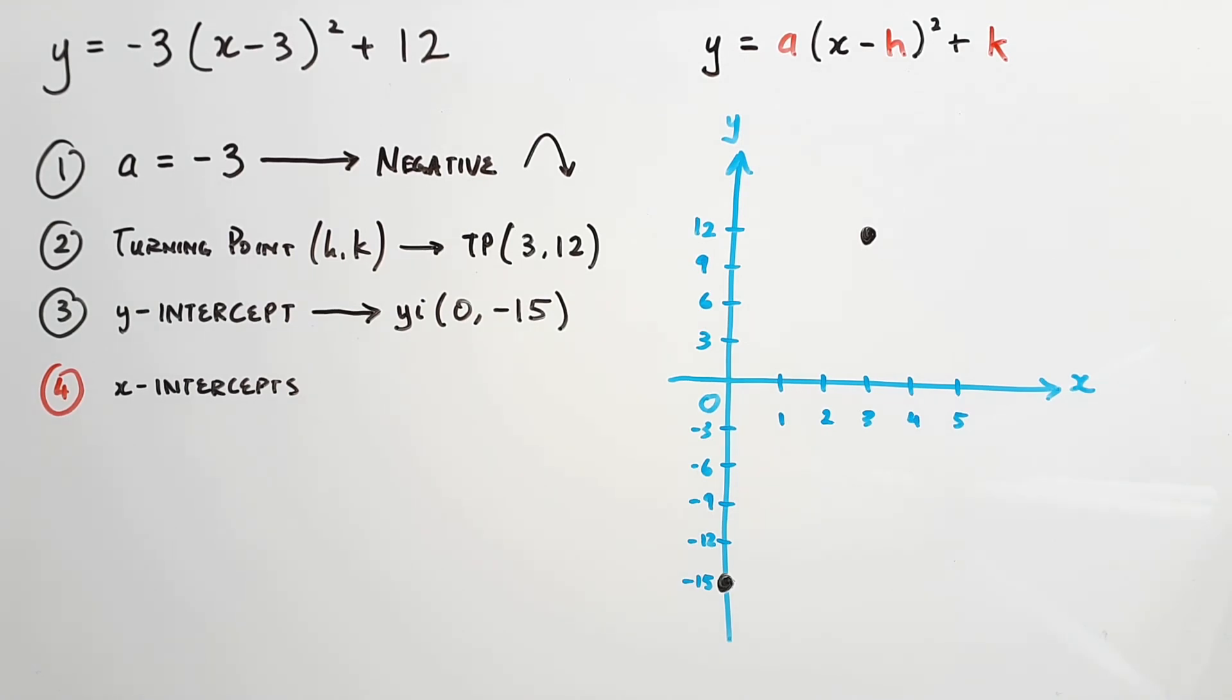Just as a side note, some graphs, like these two, don't have x-intercepts, because they never touch or cross the x-axis. In those cases, we would stop at step 3.